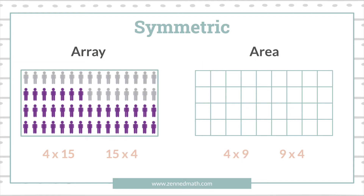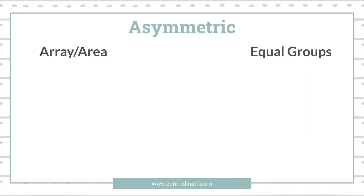What also makes it symmetric is that the factors are commutative. But in symmetric word problems, the factors are commutative and they're interchangeable — so if they're swapped, no meaning is lost. Asymmetric is the exact opposite: the factors are not interchangeable, meaning that if the factors were swapped, you would lose meaning.